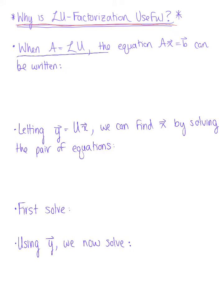When we are given an M by M matrix A defined as L times U, the equation matrix A times vector X equals vector B can be written as follows.